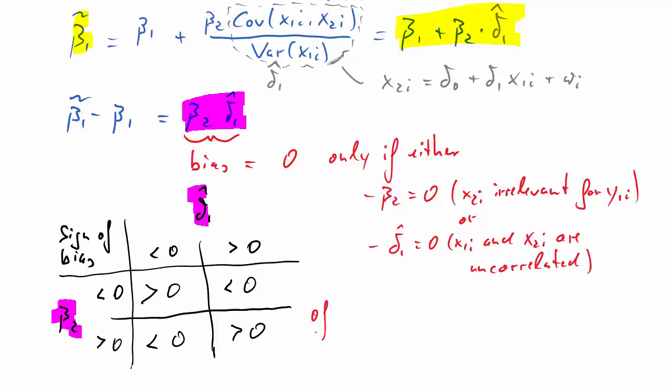Often we'll be forced to estimate the reduced model, dropping a variable, but then we may sometimes have a good understanding of what these terms delta 1 hat and beta 2 hat would be.